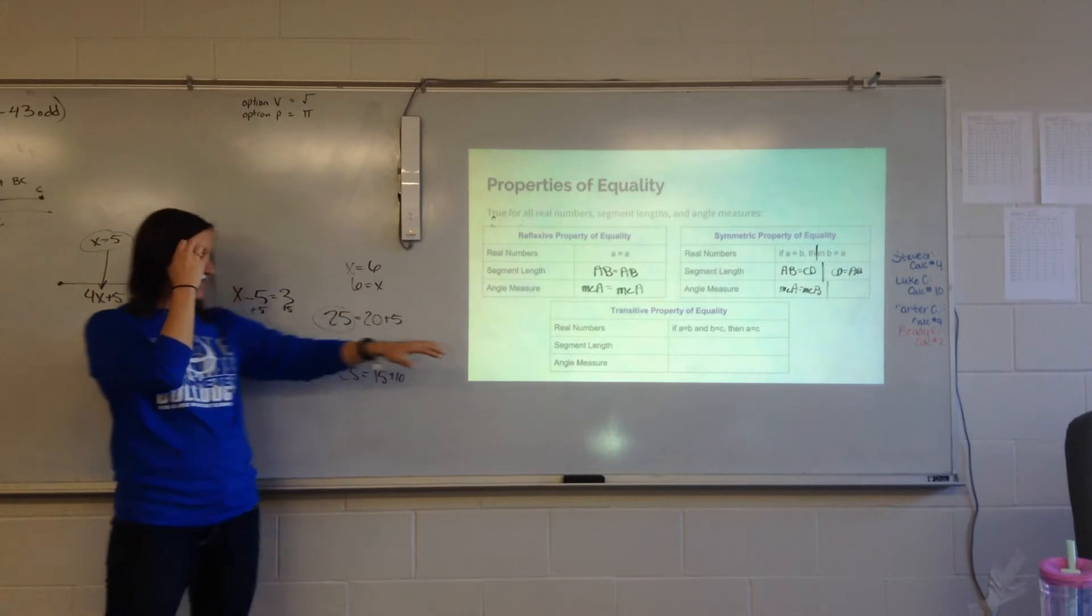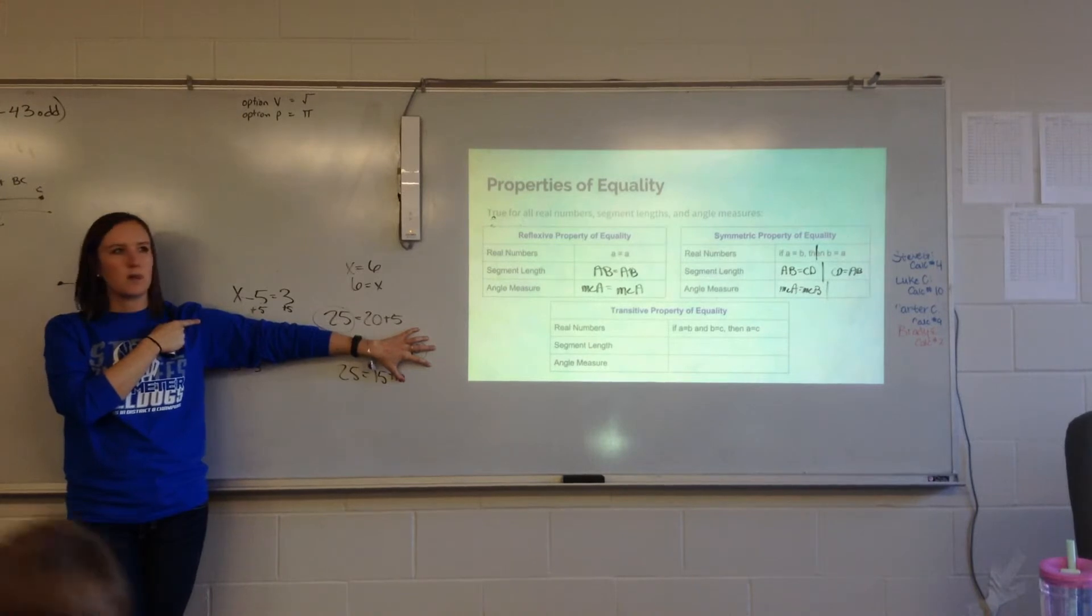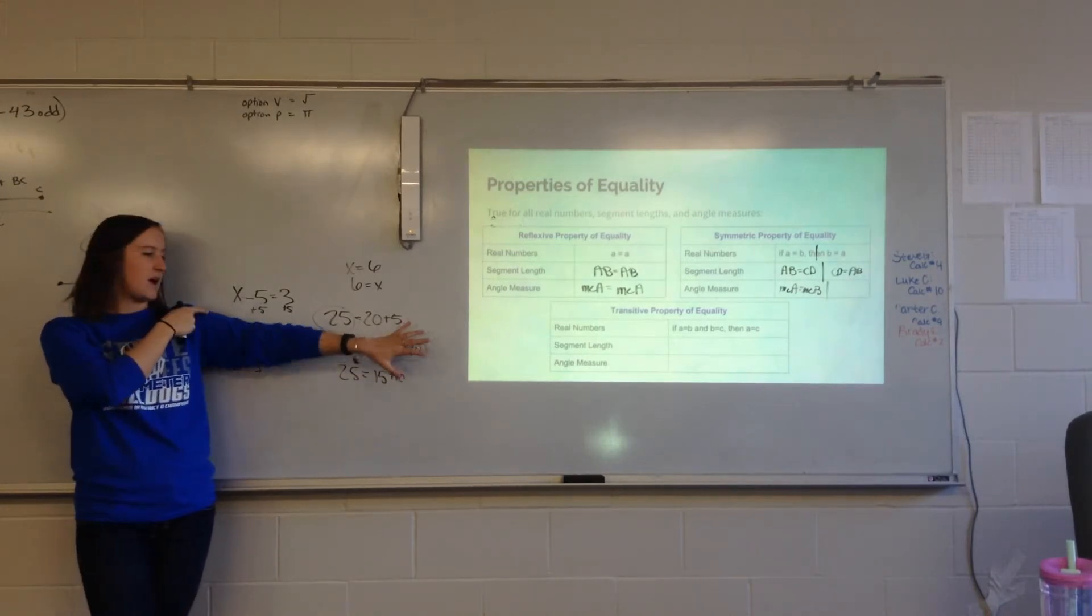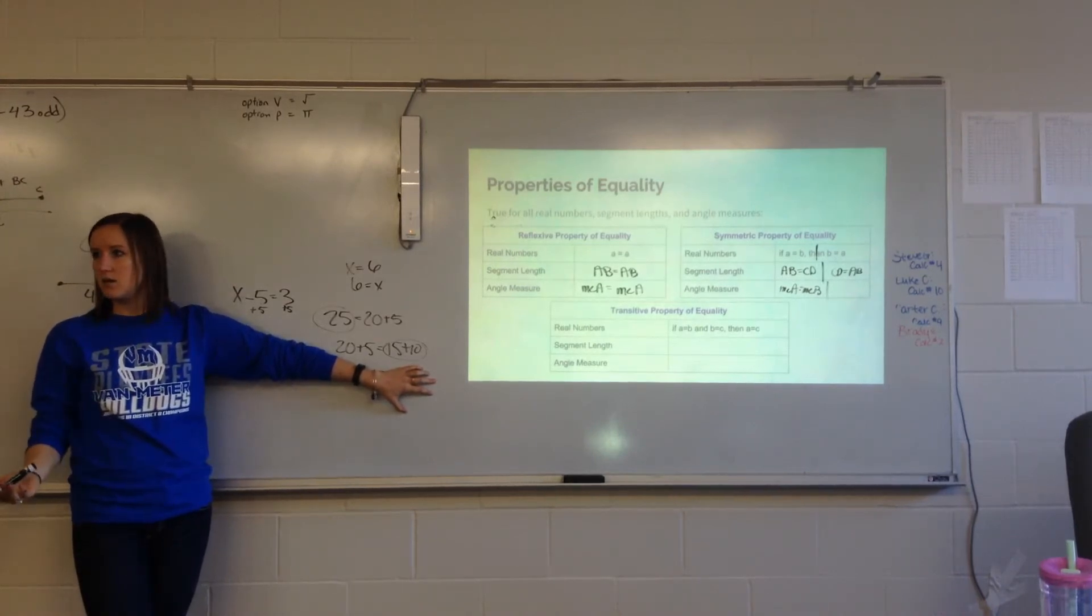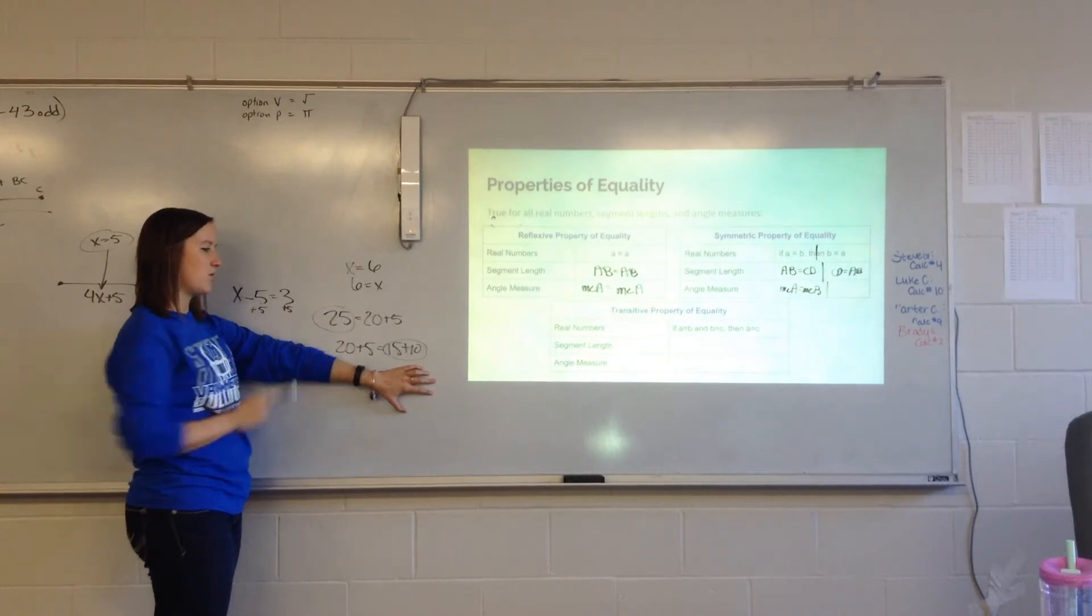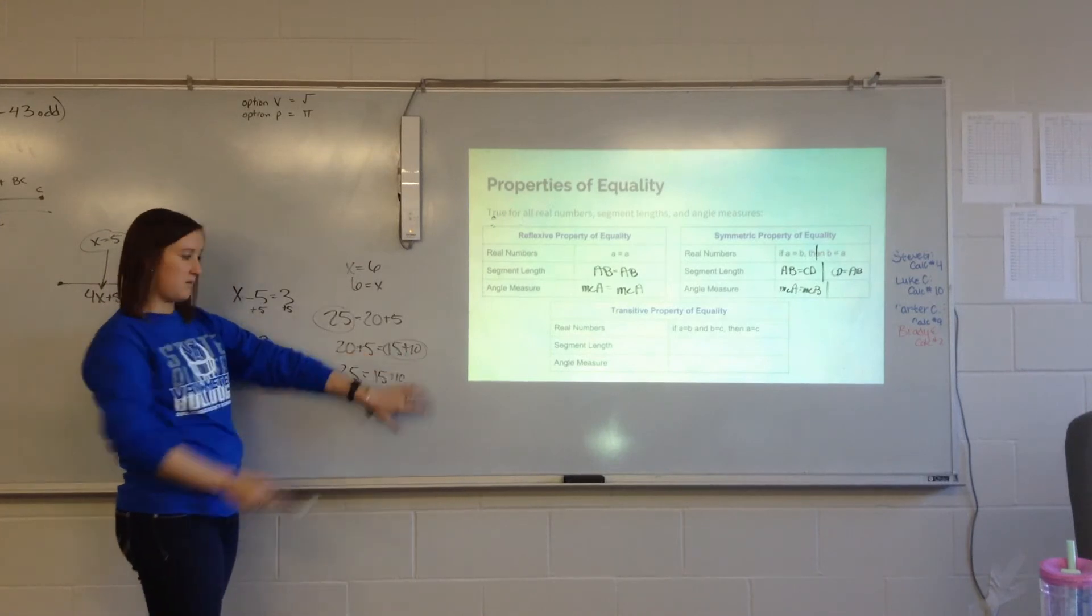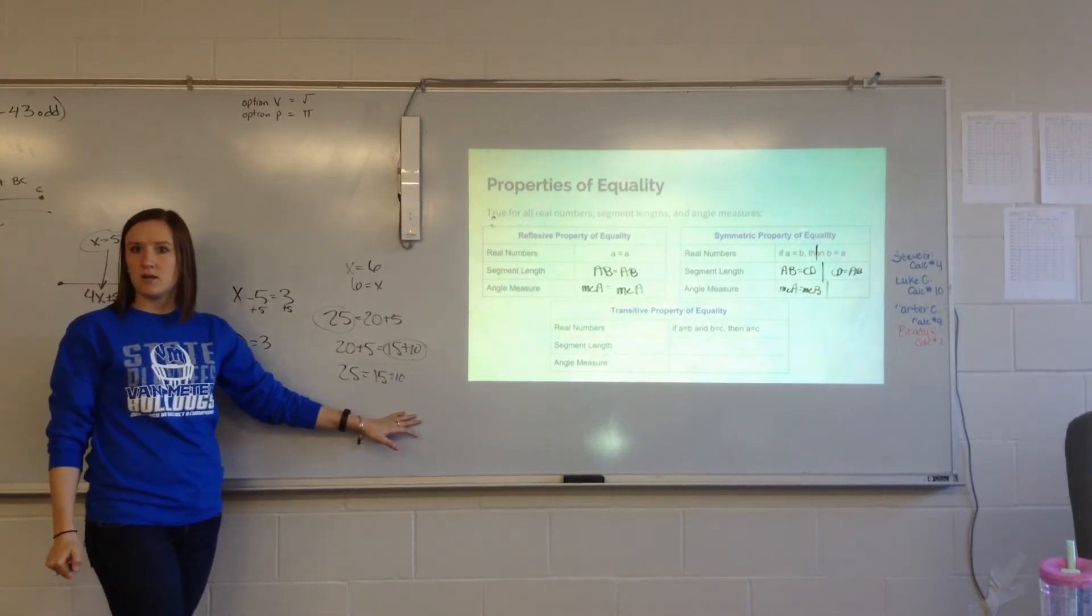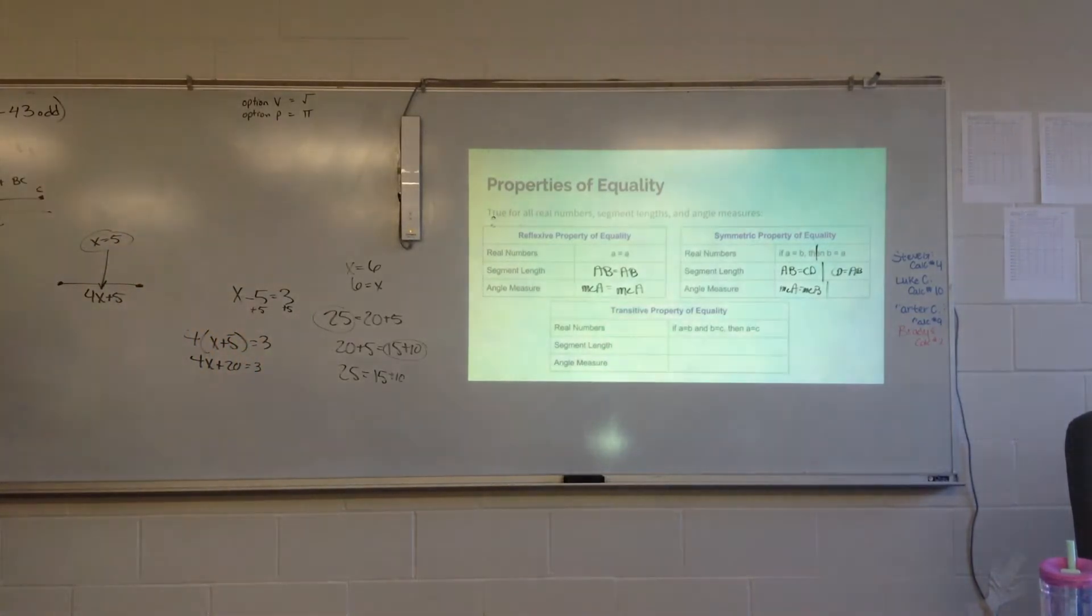Now, transitive. I have an example up here. Everybody agrees 25 equals 20 plus 5. Now, if 25 equals 20 plus 5, does everybody agree that 20 plus 5 equals 15 plus 10? Right. We said that these two are equal. And we said these two are equal. So we can say then that 25 equals 15 plus 10. That's still true, isn't it? That's what transitive means. We have a number equals one thing, and then that equals another. That one equals the last one. It kind of builds on each other.